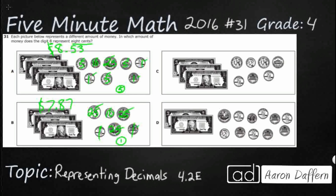Let's try option C. We've got five, six, seven dollars. No quarters on this one — just one dime and quite a few nickels, plus three pennies. Three pennies in the right combination could help us get to eight. Starting with the dime: 10. Skip count by fives: 15, 20, 25. Then pennies: 26, 27, 28. Aha — that's what we've been looking for! There's the eight in the eight cents. So most likely that is our answer.